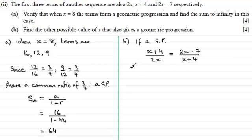It's going to be in the same ratio as 2x minus 7 divided by x plus 4. I'm going to multiply both sides by 2x and x plus 4.